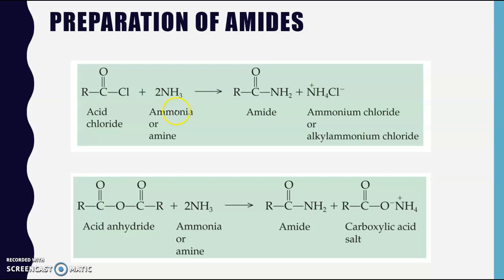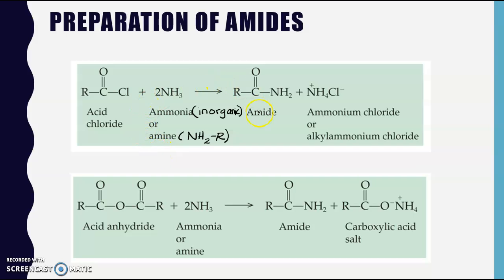A couple of things to draw your attention to: it says ammonia or an amine rather than just an amine. Ammonia, NH3, is inorganic - it doesn't have any carbon group. But it can be used to generate an organic amide because then the product does have a carbon group. Or we could have an actual amine, which would have a similar structure except at least one hydrogen has been replaced with alkyl groups.